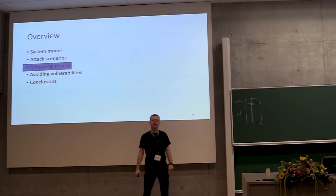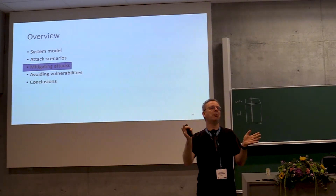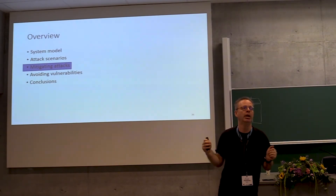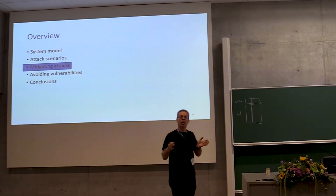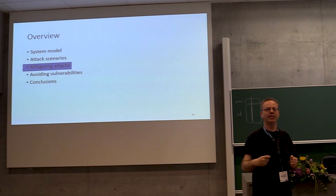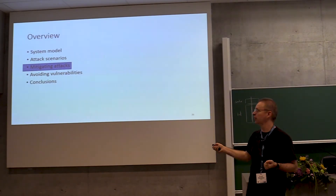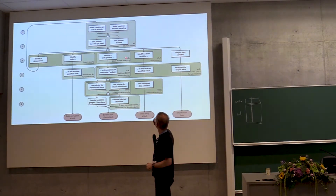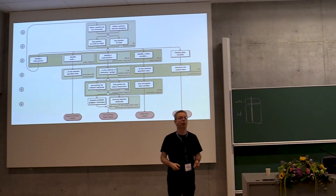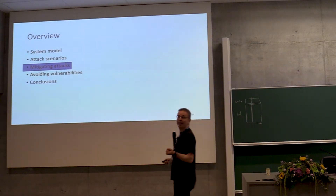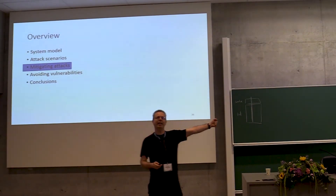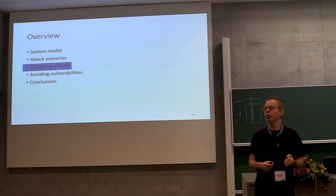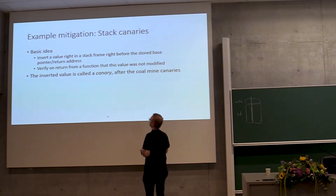So what can we do about it? There are two kinds of approaches. One is: we keep the bugs in the program — big programs will always have bugs, about two bugs per hundred lines of well-engineered code — so instead we harden the compiler, operating system, and processor such that 'anything can happen' becomes less dramatic. That's the idea of mitigating attacks. I'll show one very simple mitigation that deals with the attack I've shown, and point you to the Oakland paper for an overview of the many defenses proposed over the years. That very simple mitigation is called stack canaries.